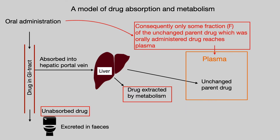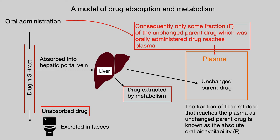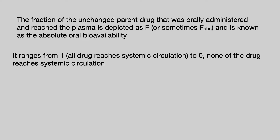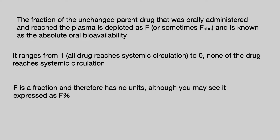Consequently, only some fraction of the unchanged parent drug that was given orally actually reaches the plasma. The fraction of the oral dose that reaches the plasma as unchanged parent drug is known as the Absolute Oral Bioavailability, or F — sometimes written F-ABS for absolute. It ranges from one, where all the drug reaches systemic circulation, to zero, where none does. F is a fraction and so it has no units, although you may see it expressed as a percentage.